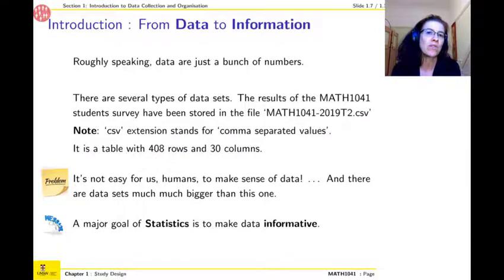In the case of the previous file, there were 408 rows and 30 columns. It was already too big for our brain to get the big picture, and that's much smaller than the type of data set you can have in other situations. Just think of the amount of information your phone will be collecting every day on whatever you do. The goal of statistics is to turn data into information.